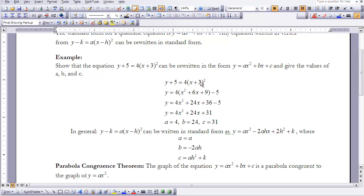So then we'll need to distribute the 4 throughout. 4 times x squared gives me 4x squared, 4 times 6x gives me 24x, and 4 times 9 gives me 36, and then we still have the minus 5.